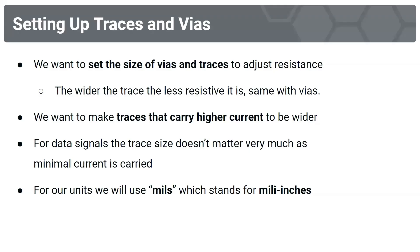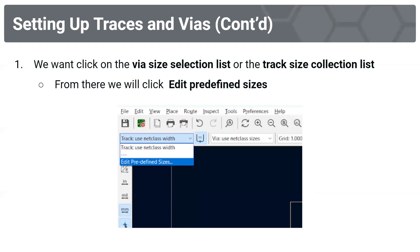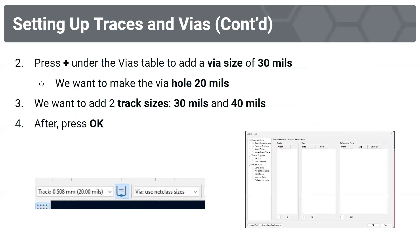Before laying down traces and vias, we need to set their sizes to adjust resistance. The wider the trace, the less resistive it is. Traces carrying higher current should be wider; data signal traces don't need to be as wide since minimal current flows through them. Units are in mils (milli-inches). Go to the track size dropdown and select Edit Predefined Sizes. Add track sizes of 30 mils and 40 mils. Add a via with diameter 30 mils and hole size 20 mils. Press OK.